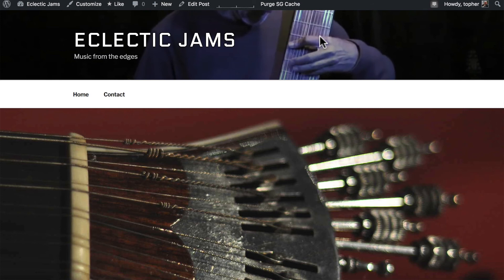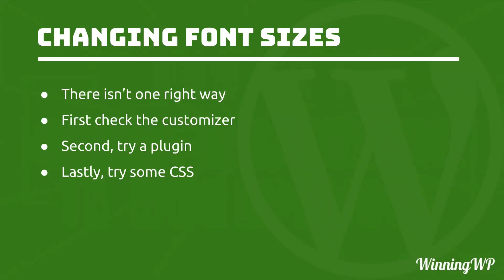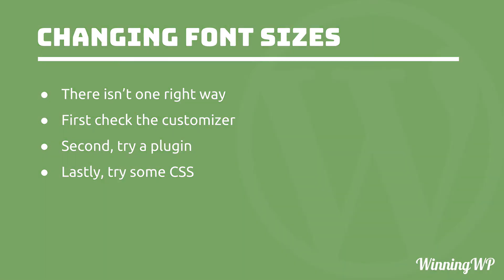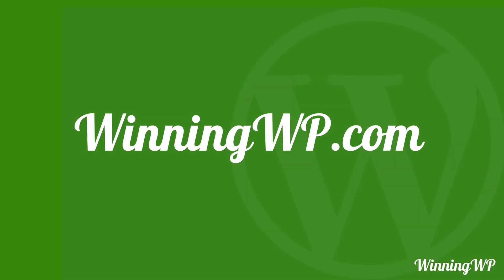Now we've talked about three different ways to change your font size. Let's review those. First of all, there isn't one right way to do this. My first suggestion is to always check the customizer — if it comes with font size adjustments built in, it's super easy to do. If it doesn't, try a plugin; there are others beyond the one I tried. And lastly, try a little CSS: right-click on the element you want to resize, find out what it's called, and in the customizer put in font-size and a value with px. Feel free to experiment with any of these methods and find a size that works for you. If you'd like to learn more about WordPress, check out winningwp.com.